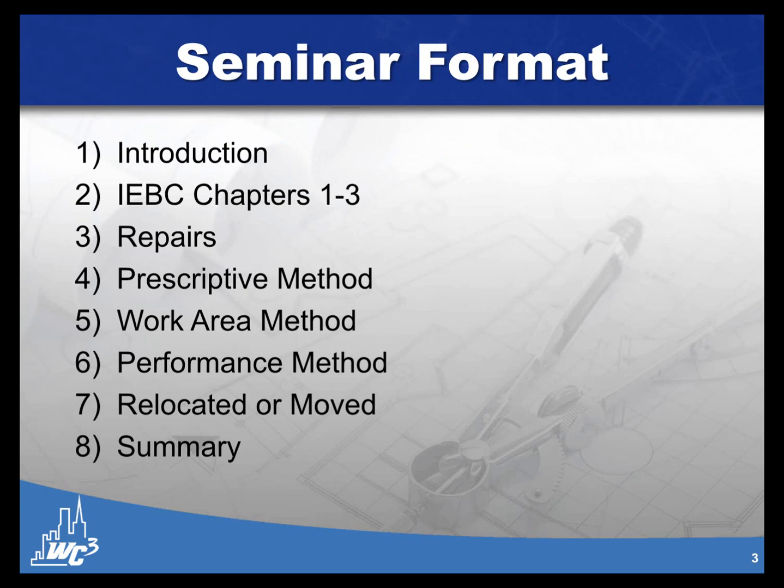The way I want to lay it out: first we'll do a general introduction as to why we even have an existing building code and how we got here. Then we'll do introductory content from chapters one through three. Chapter one is the administrative chapter, chapter two is definitions, and chapter three covers general criteria. We'll then move into repairs, the prescriptive method, the work area method, the performance method, and then address relocated buildings or moved structures, followed by a brief summary.